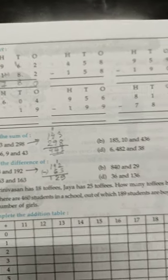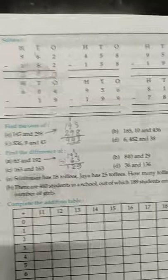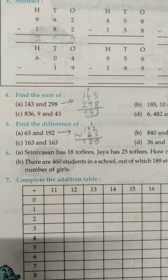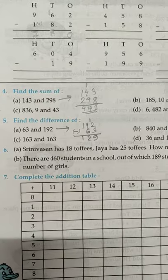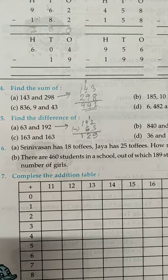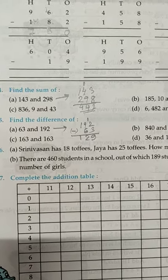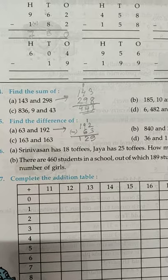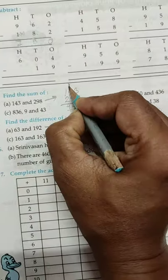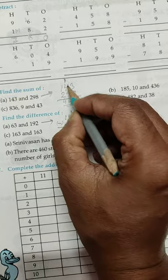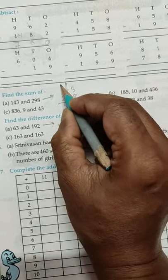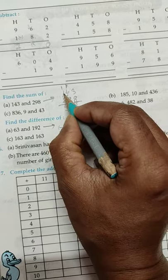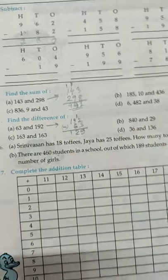So rest of the subtract you will solve. Next find out sum. You need to find out the sum. 143, 298. 8 plus 3, 11. 1. 1 will be the carry, 1 you will take in hand. 9 plus 4, 13 plus 1, 14, 4. Again 1 carry. You need to write in carry 1 in hand. 2 plus 1, 3, 1, 4. 441.